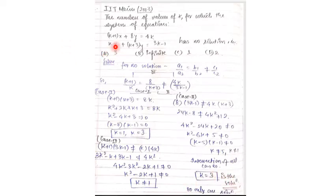The answer is 3 because we are asked for the number of values of k. The number of valid values is only 1, so the answer is 1.